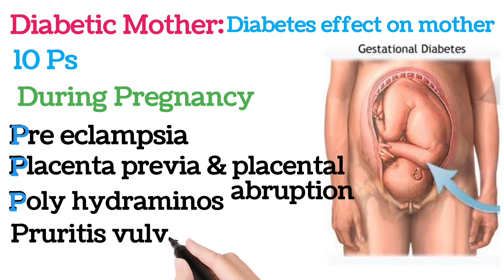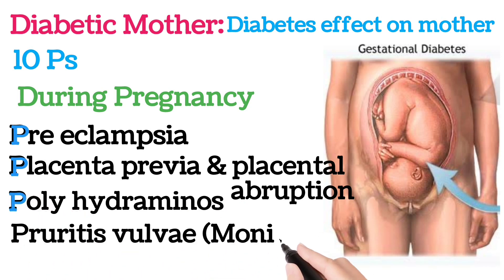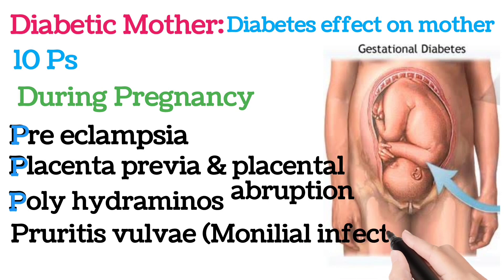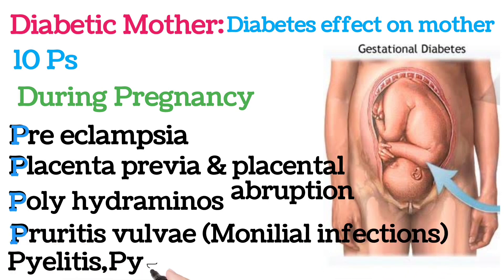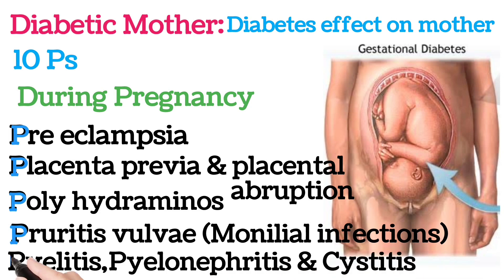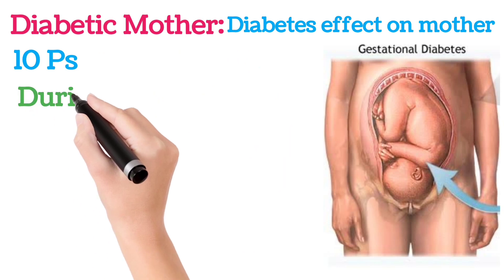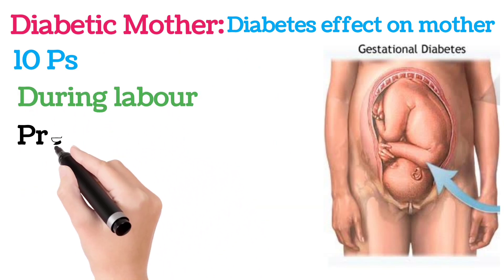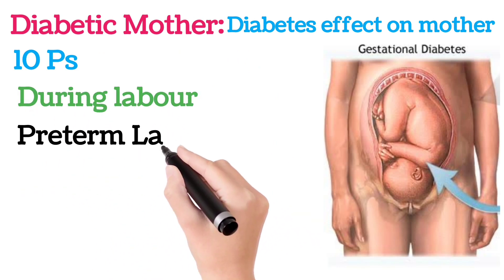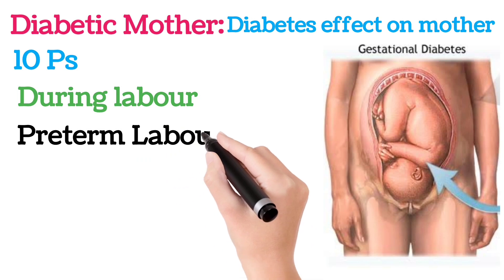Continuing the pregnancy Ps: polyhydramnios, pruritus vulva, and monilial infections. Also pyelitis, pyelonephritis, and cystitis. During labor, there are 2 Ps, the first being preterm labor.